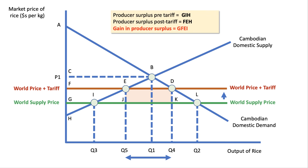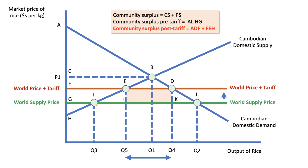Producer surplus is the revenue surplus to domestic producers. Initially at the old world price it was GIH, because the imported price was low, so Cambodian rice growers had producer surplus of GIH. Now supply has expanded to Q5, and producer surplus is FEH — which is a gain of GFEI. Any doubt on this, go back to revision lectures on welfare and how you measure consumer and producer surplus. This is important because you want to lift your analysis marks to the highest level at A-level, so bring in the concepts of consumer and producer surplus.